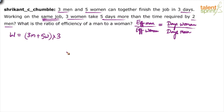This total work is being done by three women, and they take five days more than the time required by two men. Expanding the total work: (3m + 5w) × 3 = 9m + 15w, which represents the total work in terms of number of persons and number of days.